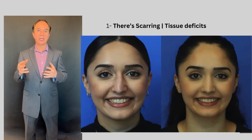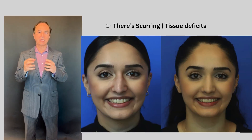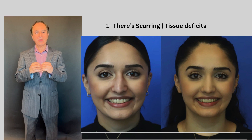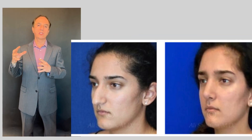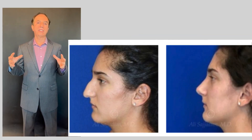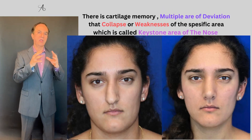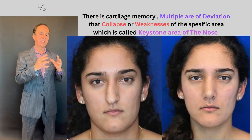What are the reasons? One, there's scarring, there's tissue deficits, there are areas where the skin is tighter and more constricted, while other areas are more expansive. There's cartilage memory, there are multiple areas of deviation and collapse or weakness of the specific area which is called the keystone area of the nose.